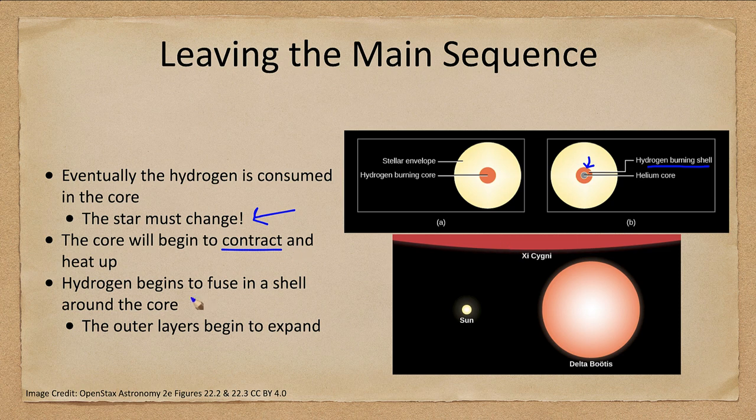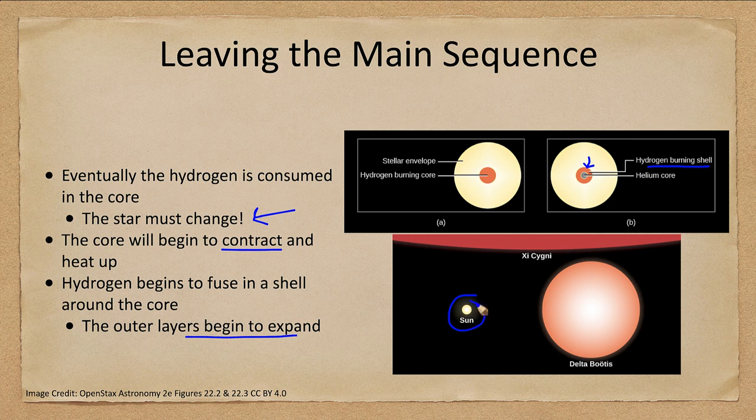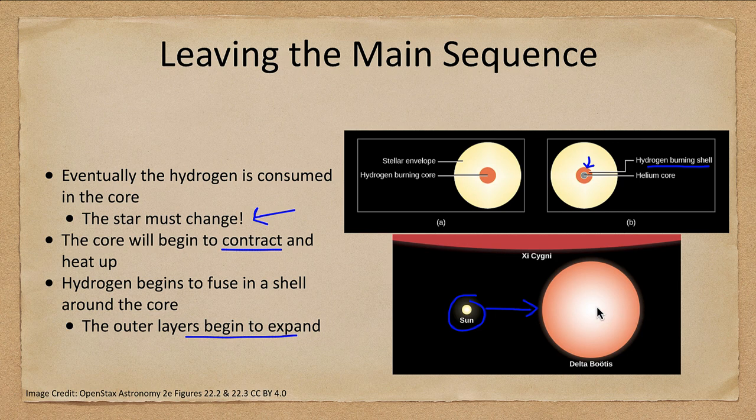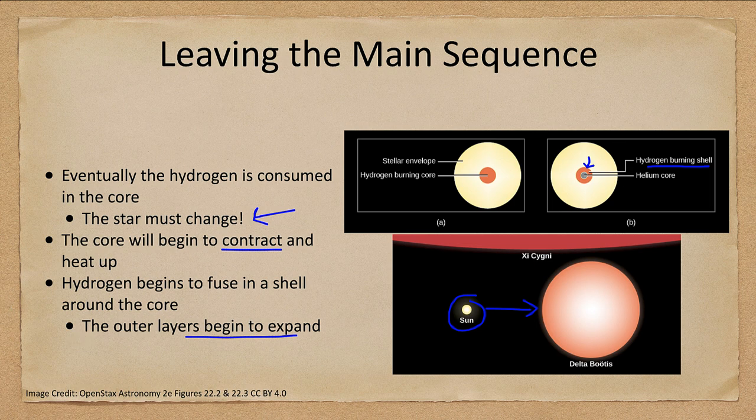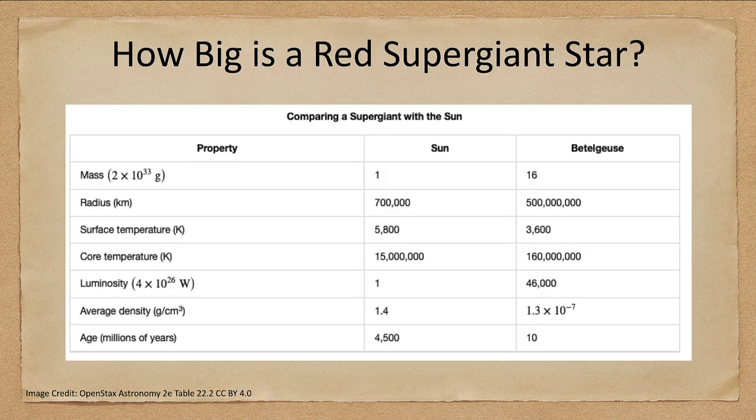So what happens as it does that? The outer layers begin to expand and something like our Sun will expand to a red giant star, becoming much larger. So the core compacts down much smaller at the center. The outer layers expand outward becoming larger and larger.